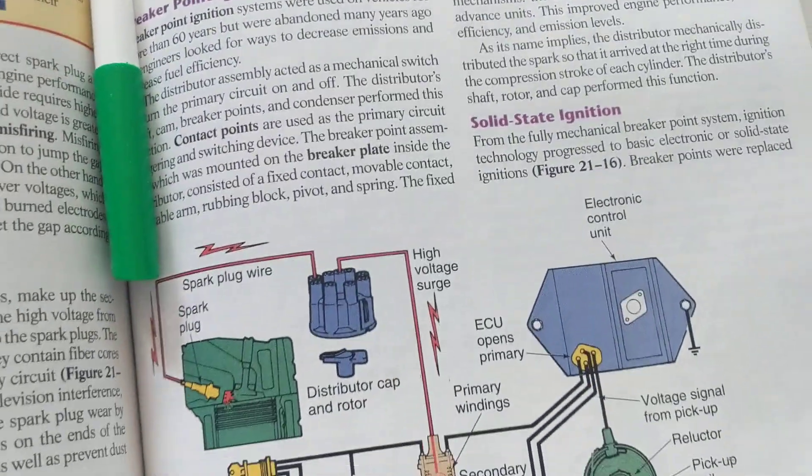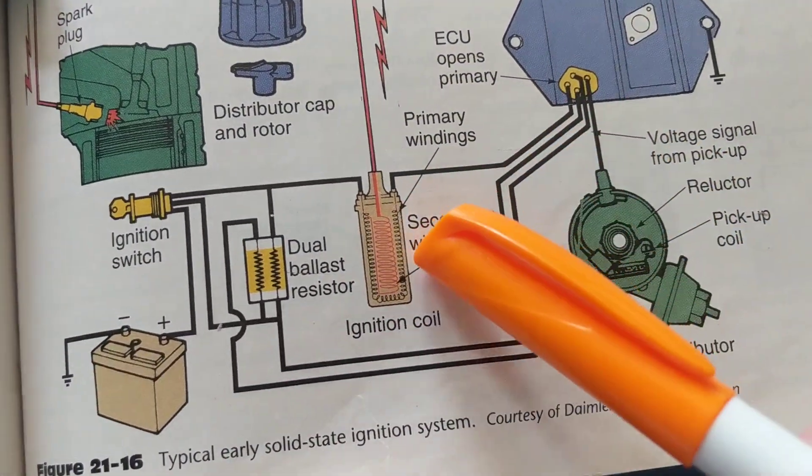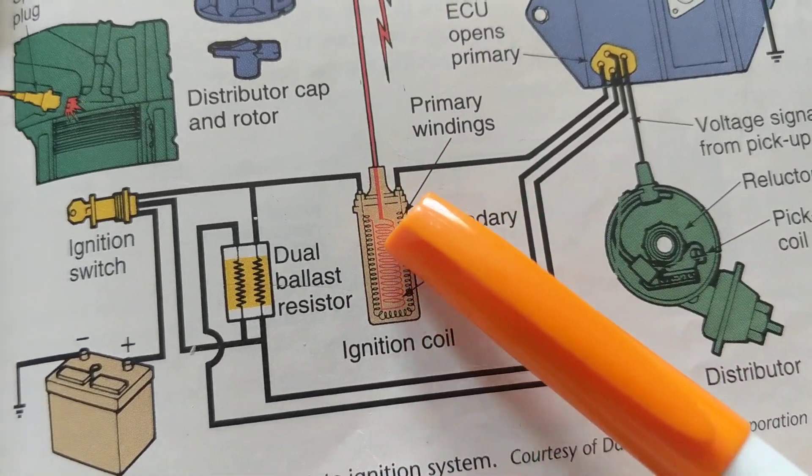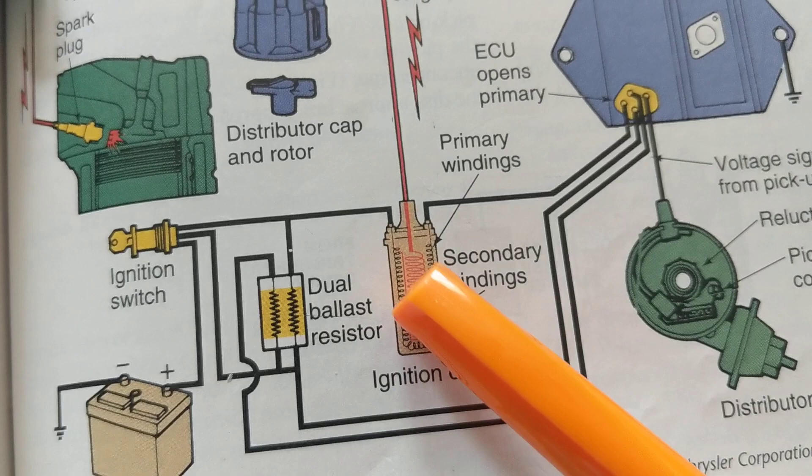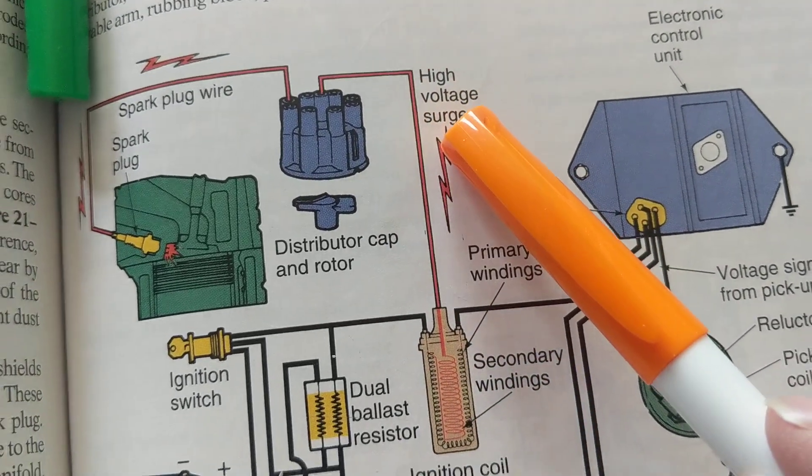Over here you have the ignition coil—I call it a transformer. You can see over here, these secondary windings have much more windings on them than the primary, which is the black one. The red one, which is the high voltage surge, goes into the distributor.